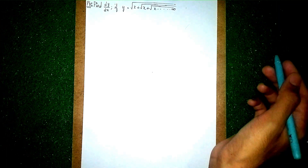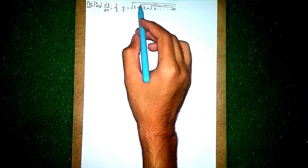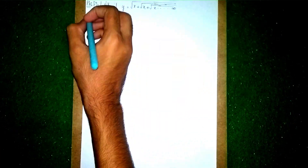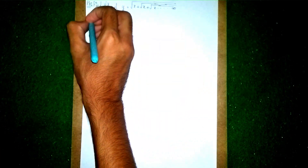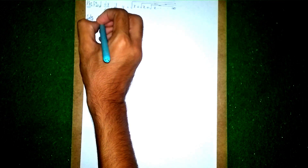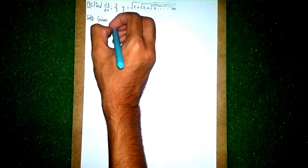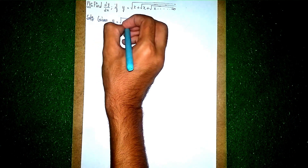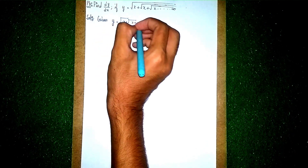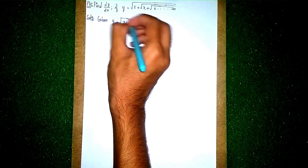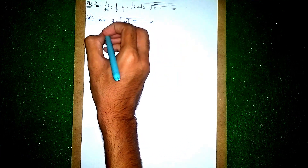Hello everyone, welcome back to my channel. We need to find dy/dx if y is equal to the square root of x plus the square root of x plus the square root, continuing till infinity. This is a differentiation question. For a short solution, write what is given: y is equal to the square root of x plus the square root of x plus... till infinity.